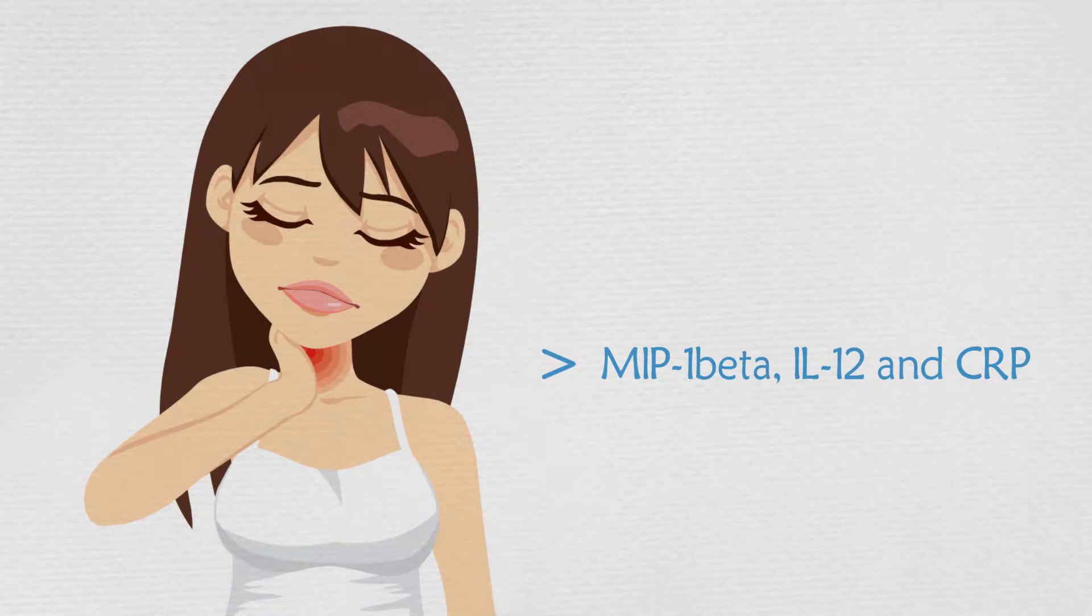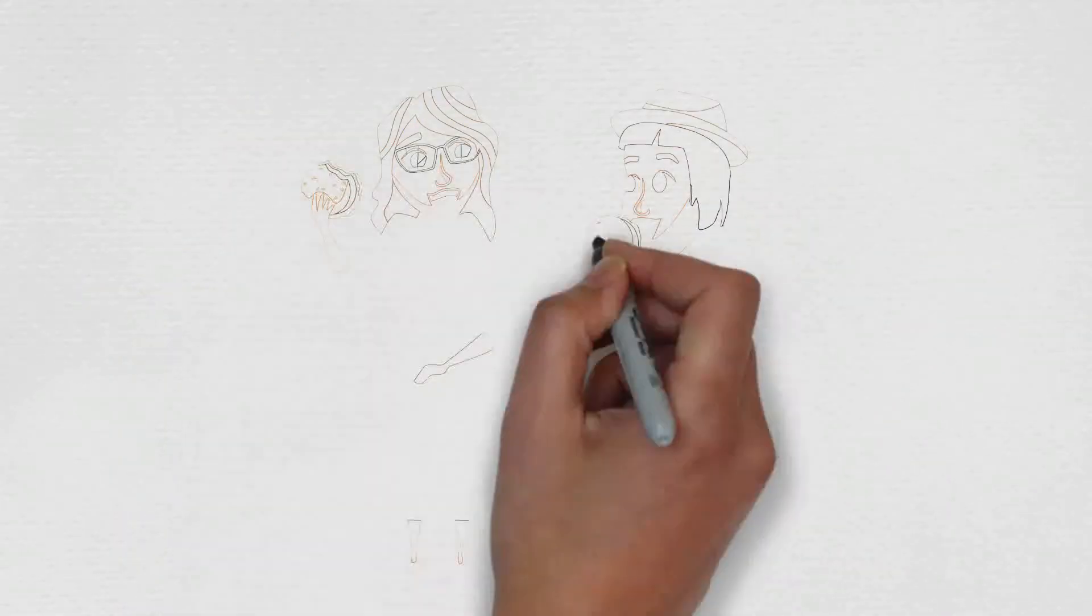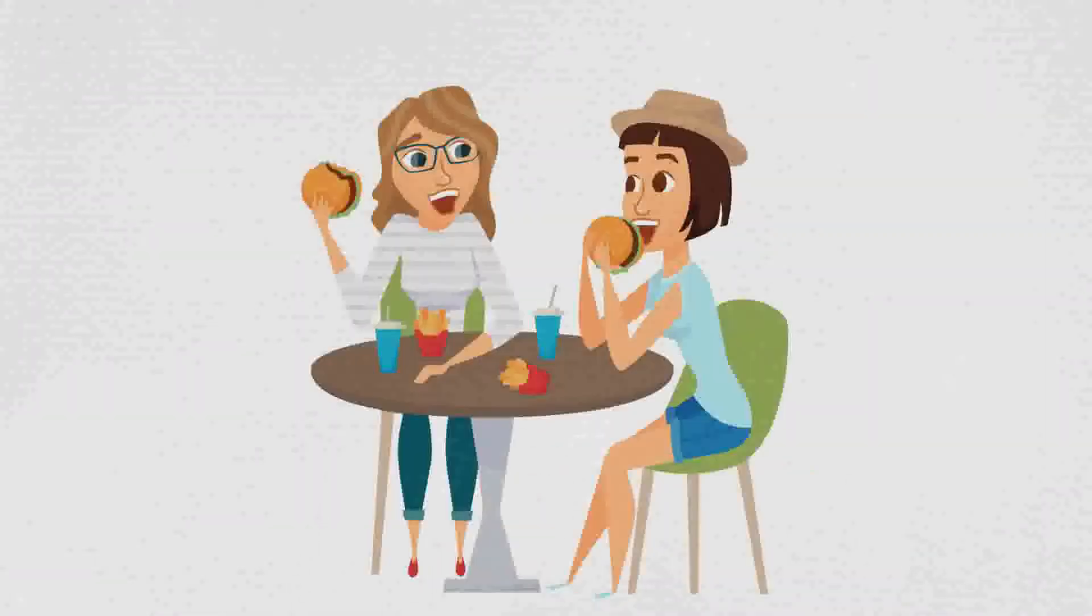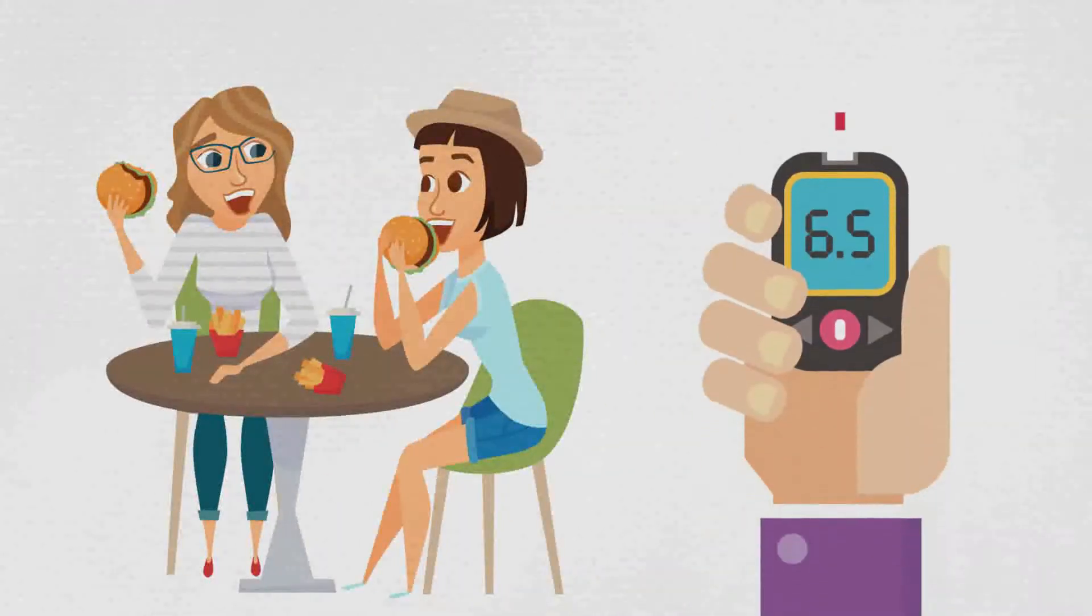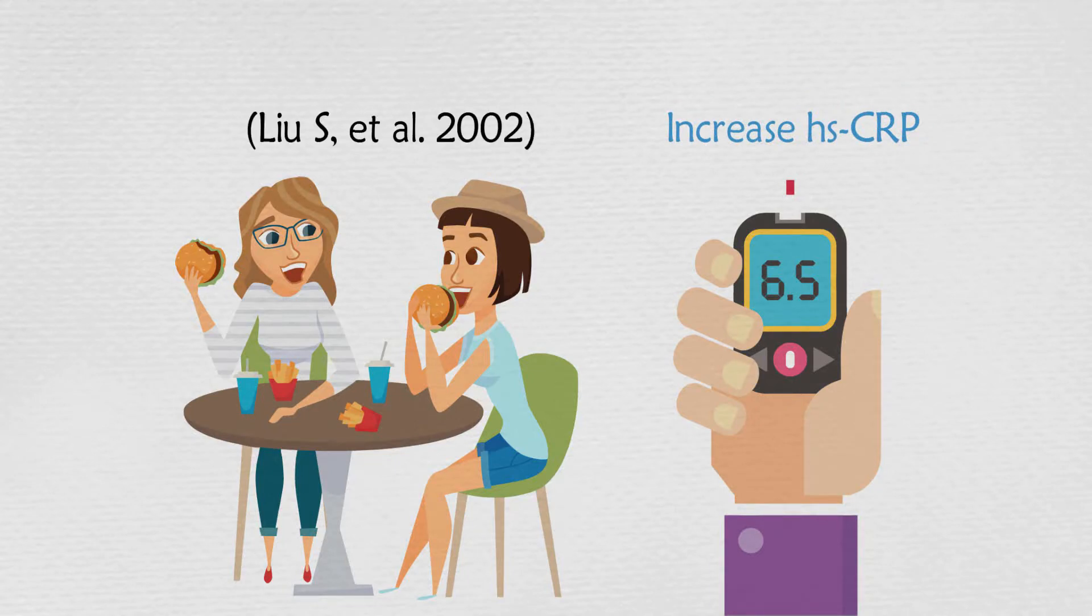How can you reduce inflammation? The food you eat can greatly affect inflammation. Food which raises the blood sugar to a high level has been found to significantly increase hs-CRP, one of the inflammatory markers.